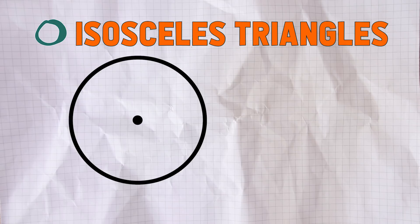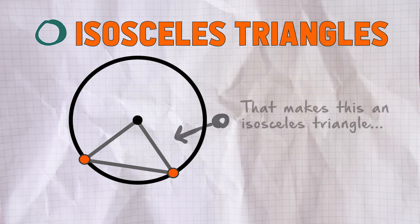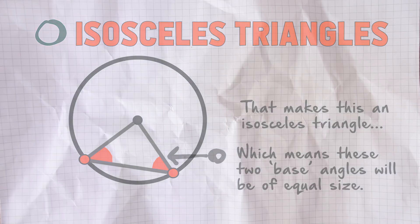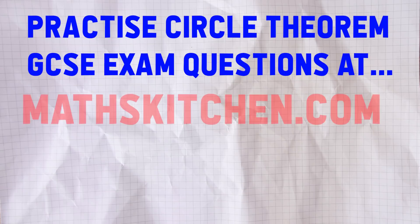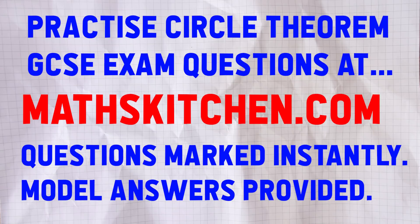Finally, isosceles triangles — it's not a theorem. It's just worth noting that if you have a triangle where two sides come from the centre of the circle to the circumference, then you've got an isosceles triangle and those two angles at the base will be equal to each other. That is everything you need to know about circle theorems. Don't forget to go and practice those at MathsKitchen.com.